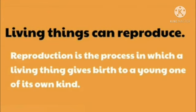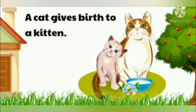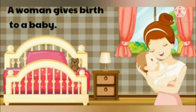Living things can reproduce. Reproduction is the process in which a living thing gives birth to a young one of its own kind. For example, a cat gives birth to a kitten, and a woman gives birth to a baby.